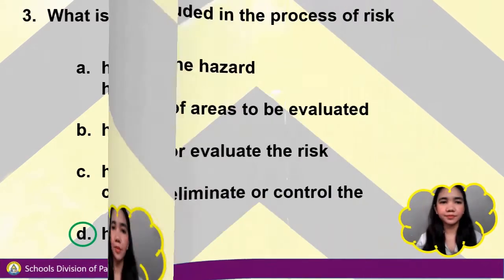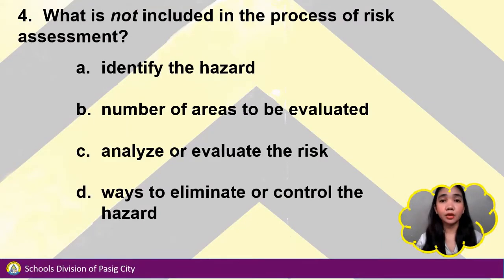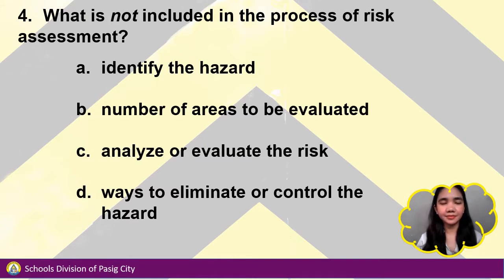Number 4. What is not included in the process of risk assessment? A. Identify the hazard, B. Number of areas to be evaluated, C. Analyze or evaluate the risk, or D. Ways to eliminate or control the hazard. Answer: Letter B — number of areas to be evaluated.